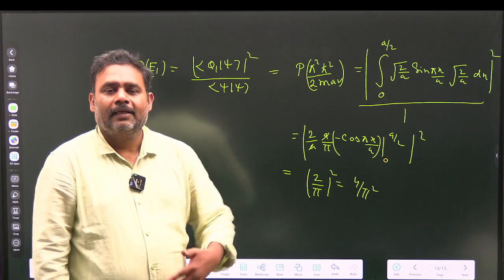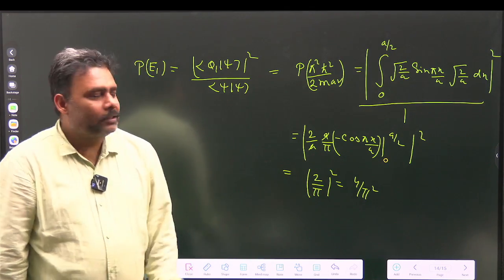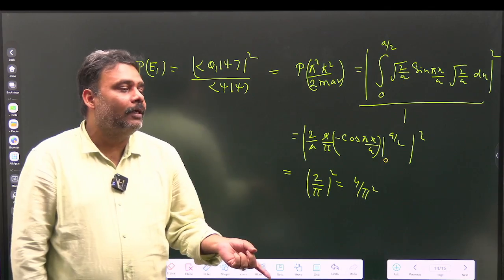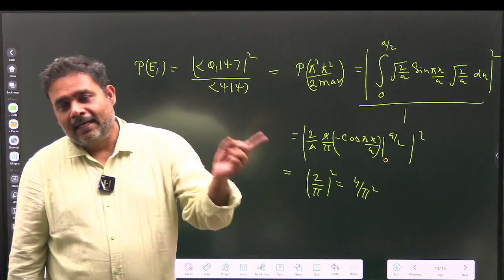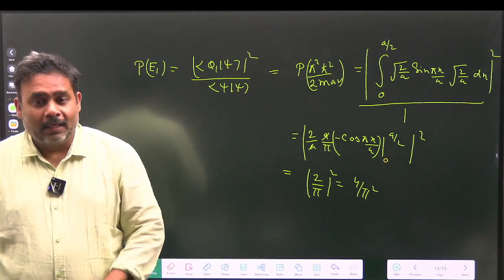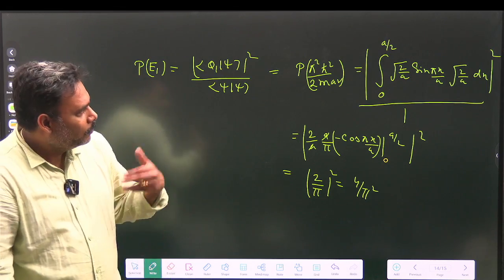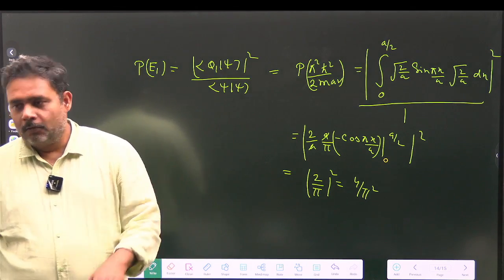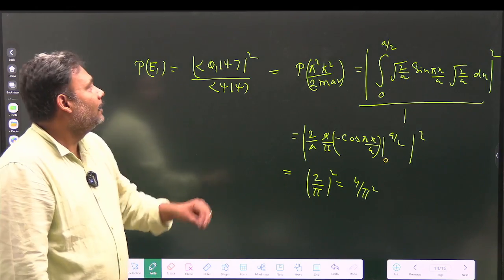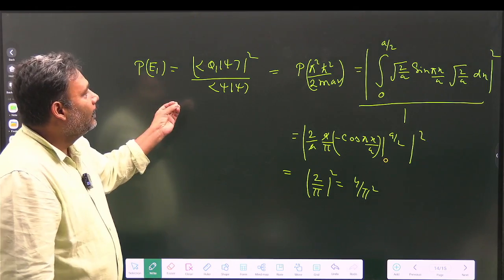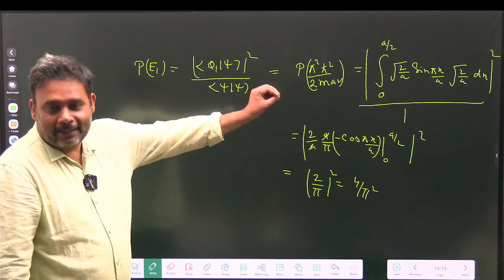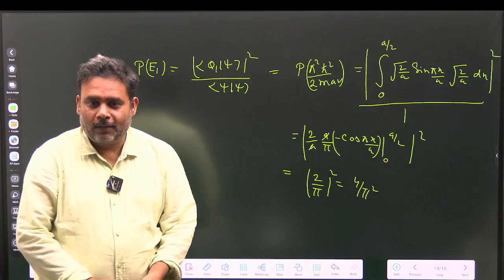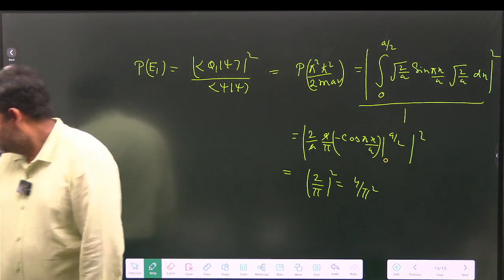Always use the postulates: first define your ψ, then calculate the probabilities. This is a beautiful question where you have to decide what your ψ is — in most questions ψ is given directly. Practice finding energy for the nth state and identifying possible values. Thank you.